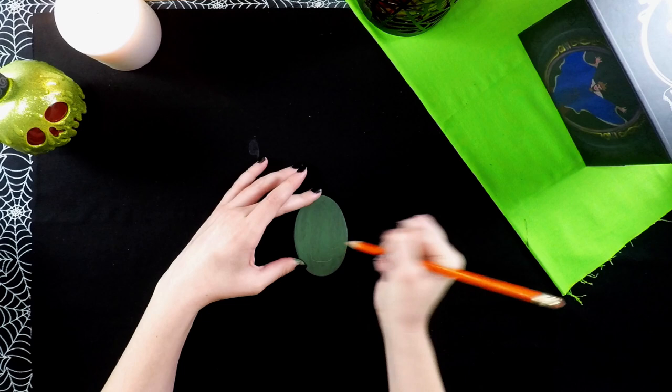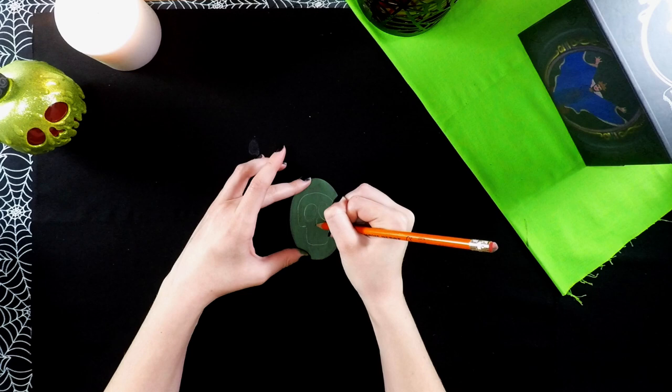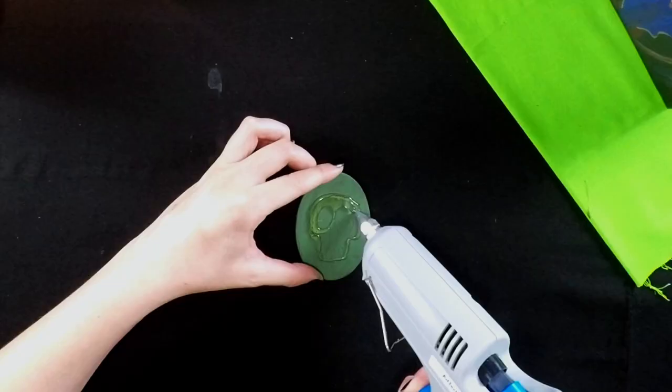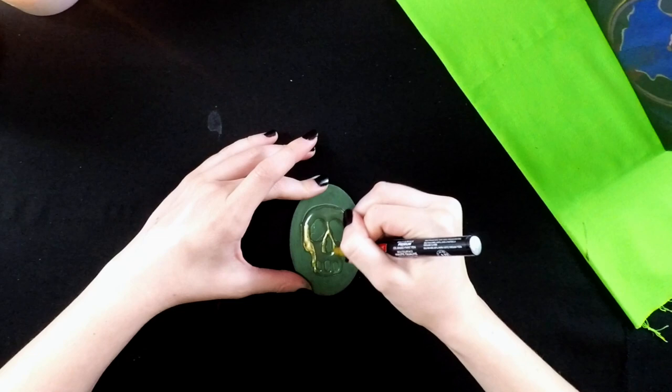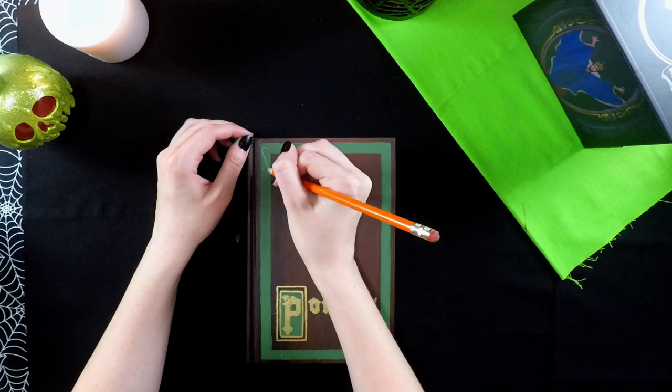Next I took an oval flat piece of wood. I painted that green and then used a pencil to sketch a skull. Then I outlined and filled in what I did in pencil with hot glue. Then I took the gold metallic marker and colored on top of the dried hot glue.